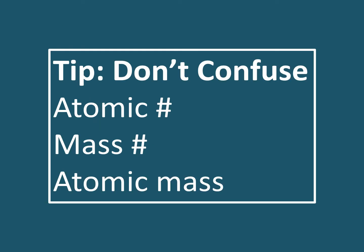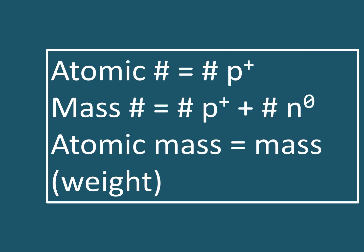Here's an important tip. Please don't confuse the following three terms. Atomic number, mass number, and atomic mass. Notice they all kind of sound alike but they all mean very different things. So to review, atomic number is the number of protons in an atom. The mass number is the number of protons and the number of neutrons in an atom. And the atomic mass is equal to the mass or the weight of an atom.